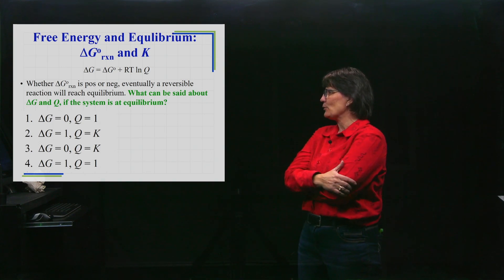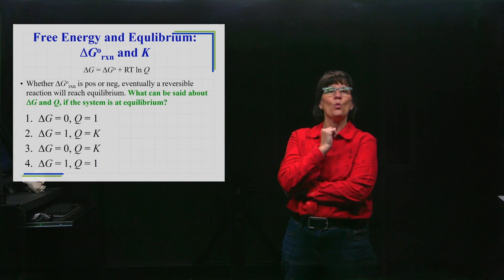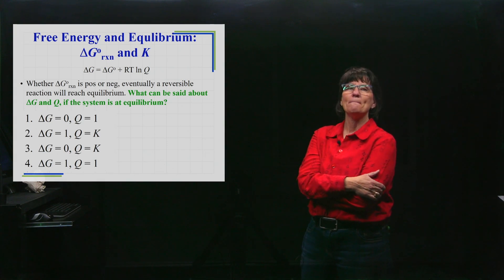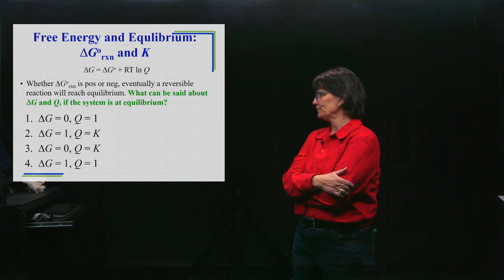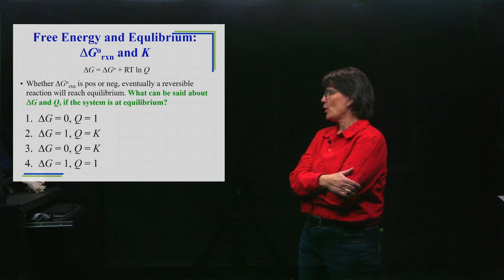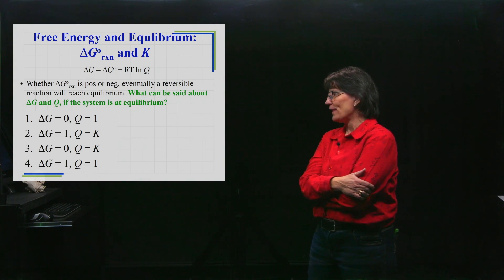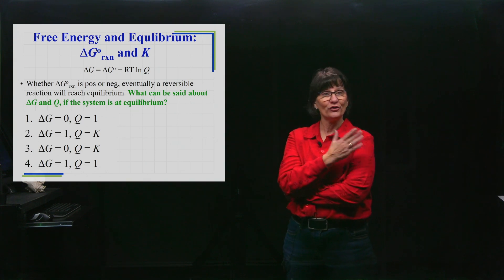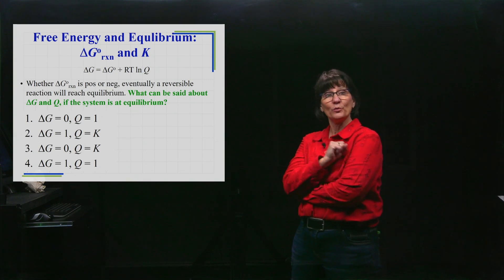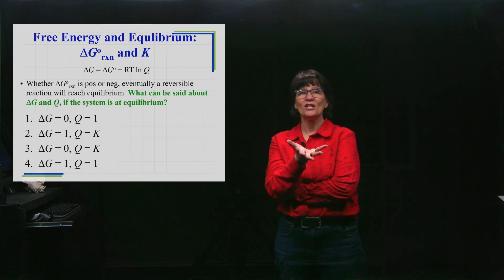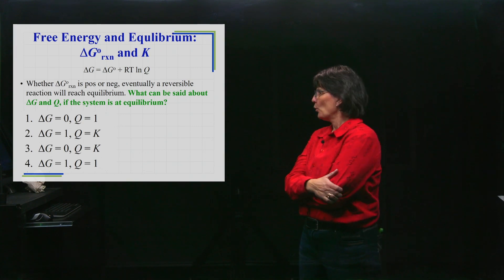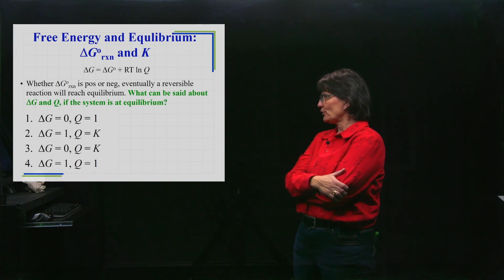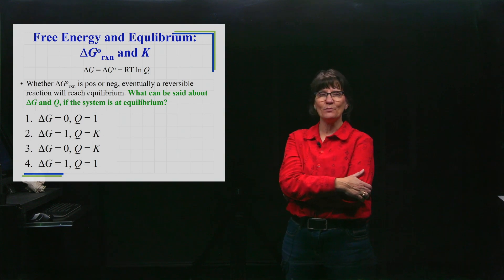Now, once it reaches equilibrium, which one of those four statements must be true? Well, once it reaches equilibrium, the delta G is zero. So we'll choose the option where delta G is zero.